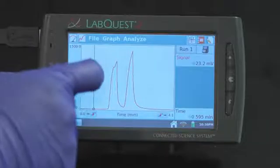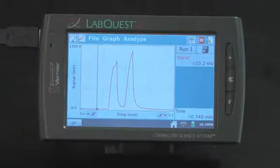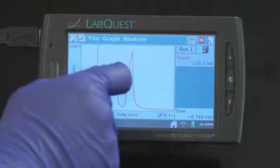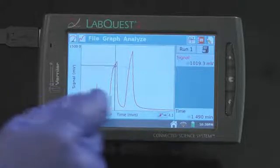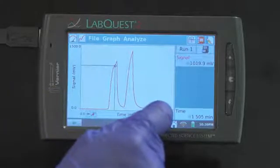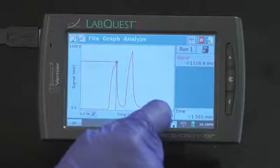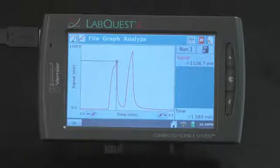To identify the retention time for a peak, tap on the graph on the screen. This will bring up the examine line. Move the examine line to the top of the peak by tapping on the screen. To fine-tune the location, use the nudge tools located at the bottom of the graph. The time displayed represents the retention time for the selected peak.